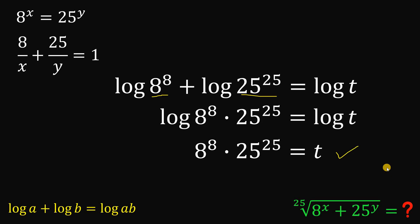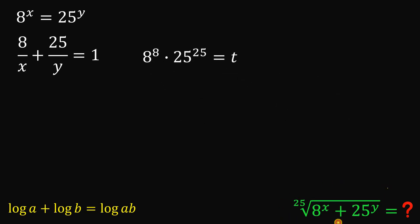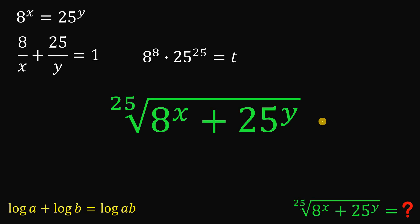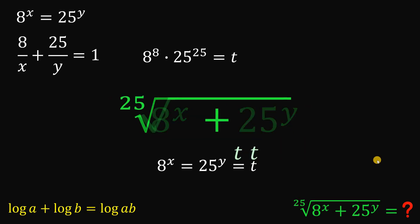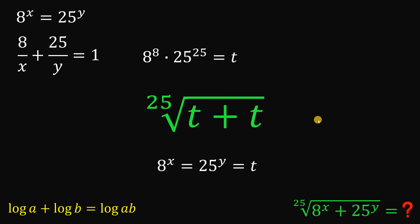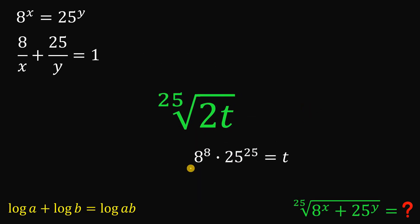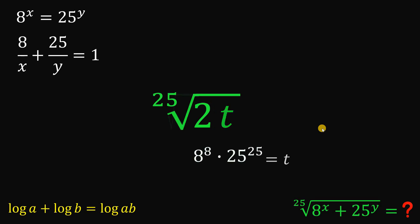Now we will use this to answer the question. We want to evaluate the 25th root of 8 raised to x plus 25 raised to the power of y. We know that both of those expressions are equivalent to t, so the expression inside the 25th root is just t plus t, which is 2 times t. And we know the value of t: it is 8 raised to 8 times 25 raised to 25.